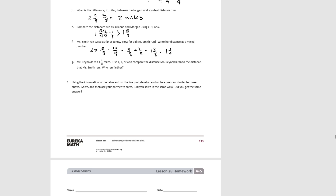Mr. Reynolds ran 1 and 3 tenths miles, and we figured out that Miss Smith ran 1 and 1 fourth miles. The whole numbers are the same, so we're comparing 3 tenths to 1 fourth. The denominators are unrelated, so we make a common denominator of 40 by multiplying 10 times 4. So 3 tenths becomes 12 fortieths, and 1 fourth becomes 10 fortieths. We see that 12 fortieths is greater than 10 fortieths, so 1 and 3 tenths is greater than 1 and 1 fourth — Mr. Reynolds ran further than Miss Smith.